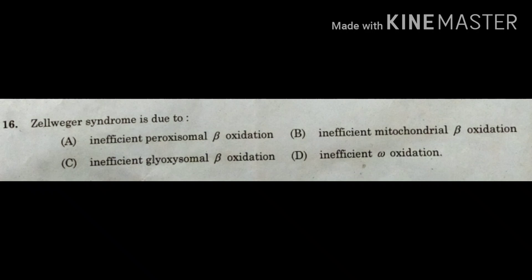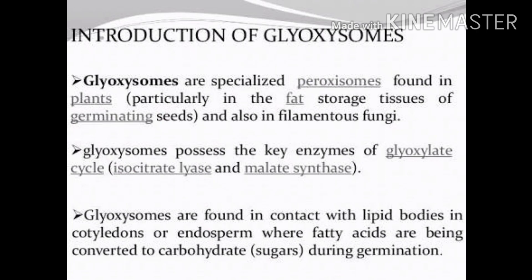Beta oxidation of fatty acid mainly occurs in the mitochondrial matrix, but it can also take place in the peroxisome and glyoxysome. Glyoxysomes are specialized peroxisomes found in plants having fatty or oily seeds. For proper seed germination, fat or oil must be converted into sugar or carbohydrate, and that process takes place by beta oxidation as well as by the glyoxylate cycle.